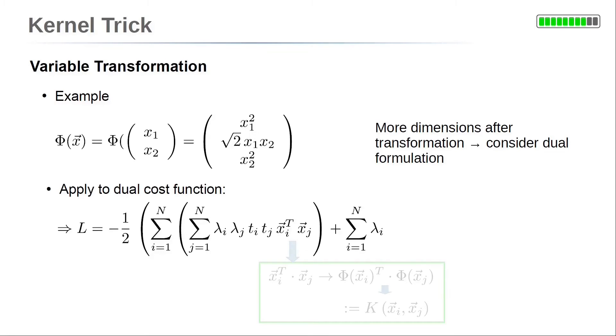But the question is, how to incorporate the variable transformation easily into the Lagrangian cost function. The variable transformation affects the dot product of vector xi times vector xj. To apply the variable transformation is straightforward. First, it is applied on the vector xi. Second, it is applied on the vector xj. Then, calculating the dot product of the transformed vectors. This result is denoted by capital K, the so-called kernel function of the transformation.